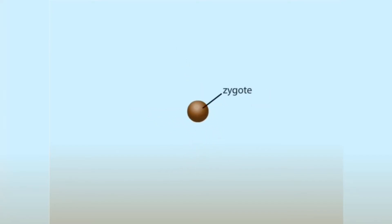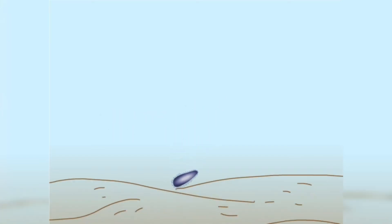A zygote begins to divide and develops into an immature larval stage called a planula. A planula, which is covered with cilia, swims to a substrate and settles there. It grows and develops into the polyp body form.